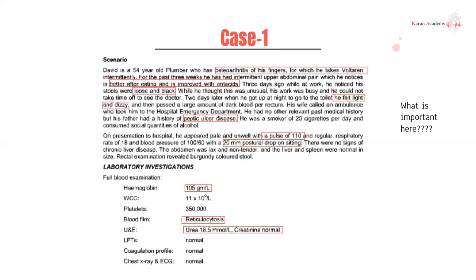His wife called an ambulance and his family history of peptic ulcer disease is also relevant. On examination, he appears pale and unwell, indicating blood loss and hemodynamic compromise. He has a pulse of 110 — being tachycardic is one of the first signs of hemodynamic compromise. His pulse is regular, so it's not AF, but still tachycardic. His respiratory rate is normal, but he has borderline hypotension.